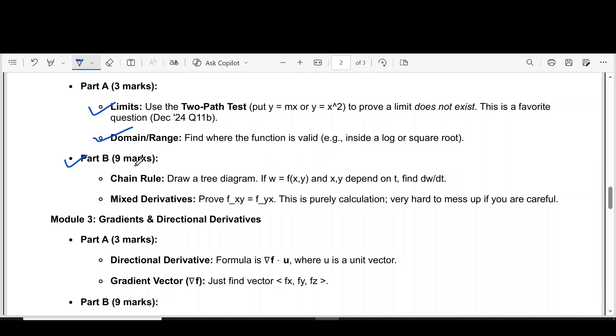Part B question from module 2 is chain rule through a tree diagram. If w equal to f of x, y and x, y depend on t, find dw by dt. Then mixed derivatives. Prove fxy equal to fyx.